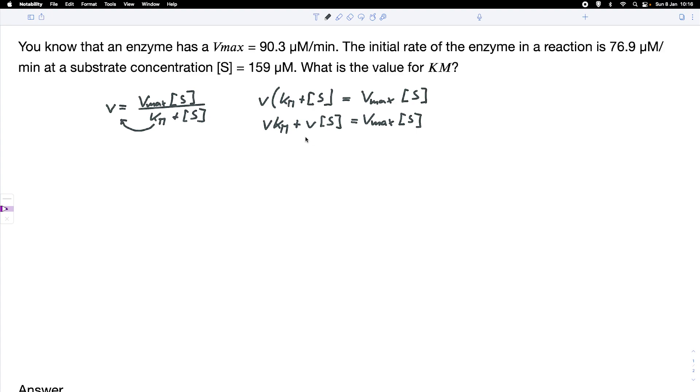And we then bring everything with Km to one side and everything that's not Km to the other side. So in this case, we bring this term to the right-hand side and we end up with VKm equals Vmax times S minus V times S. And of course, we can write this as S times Vmax minus V.